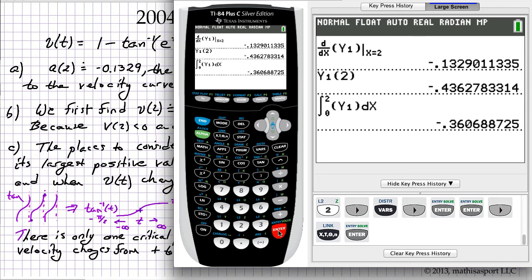So that's how much signed area gets added. But we have to add that to the initial position, which is at time t equals 0. That's given to us as negative 1. So that's negative 0.3606.